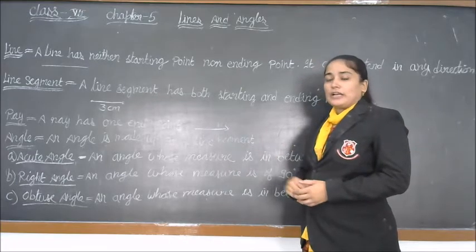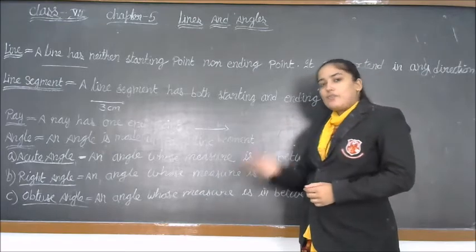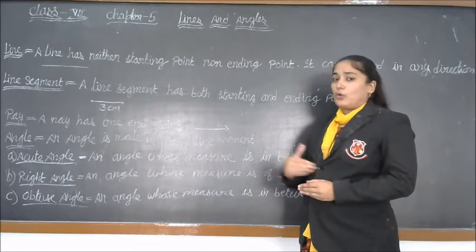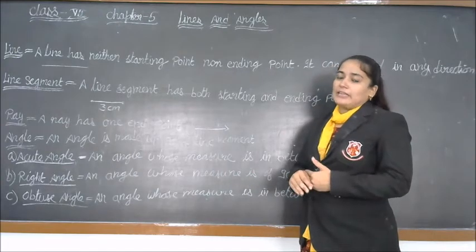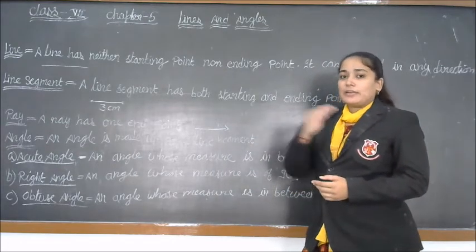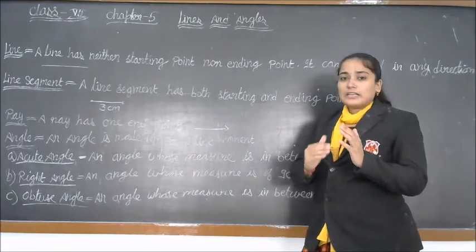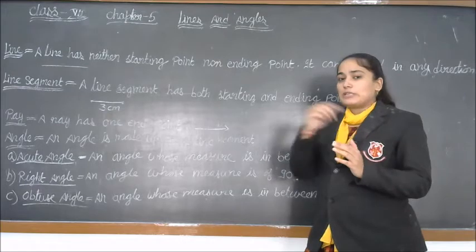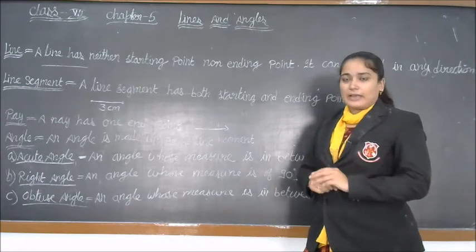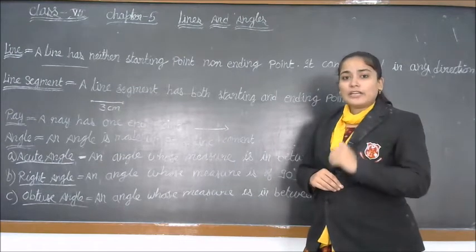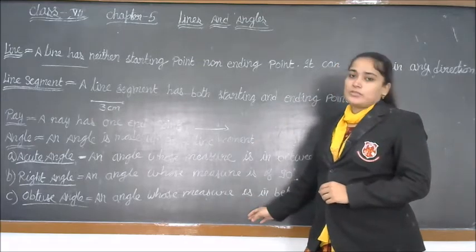The third type is obtuse angle. An obtuse angle is one whose measurement is between 90° and 180° — it cannot be greater than 180° and cannot be smaller than 90°. For example, 60° is between 0° and 90°, so it is acute. 30° is also acute. 90° is a right angle. 120° is between 90° and 180°, so it is an obtuse angle.